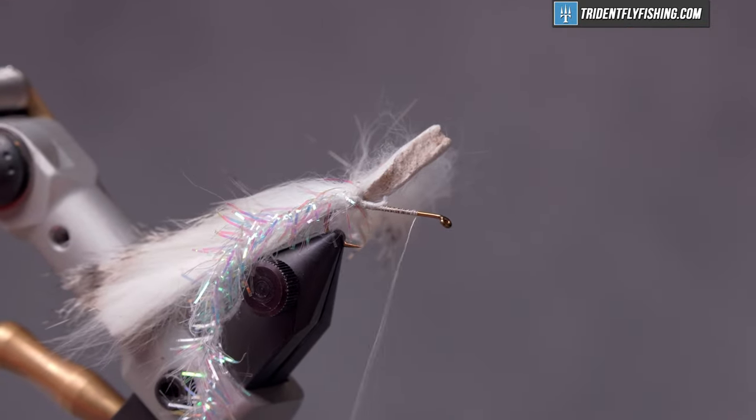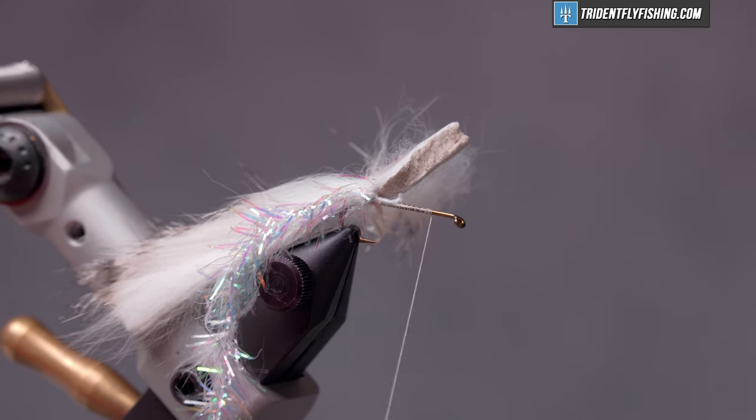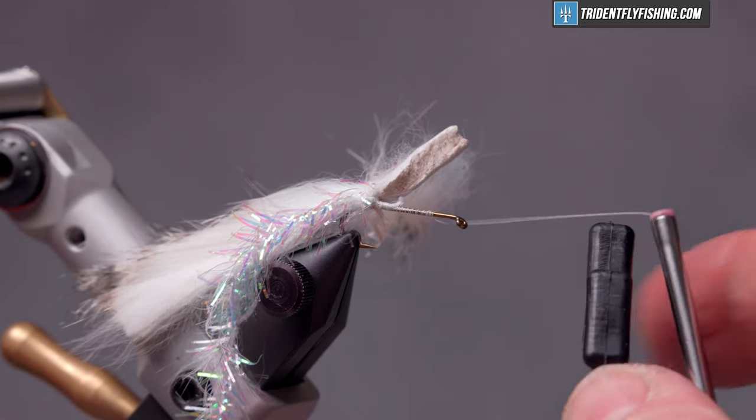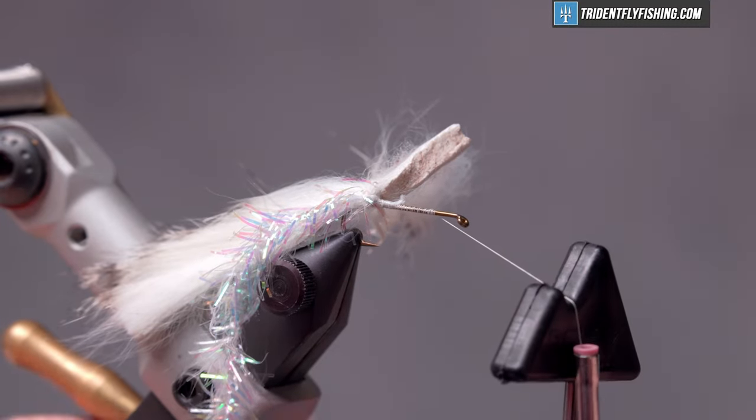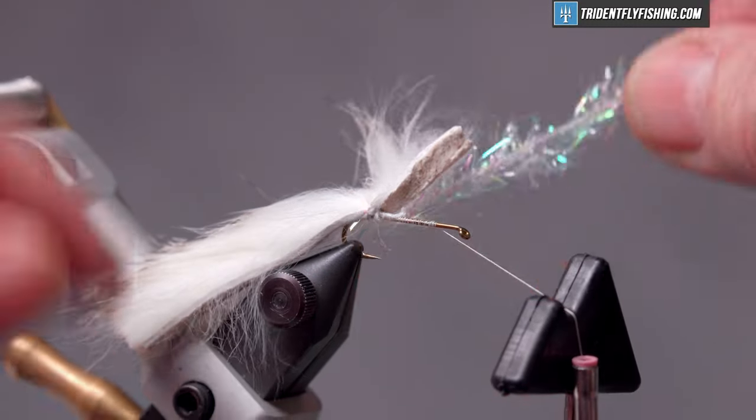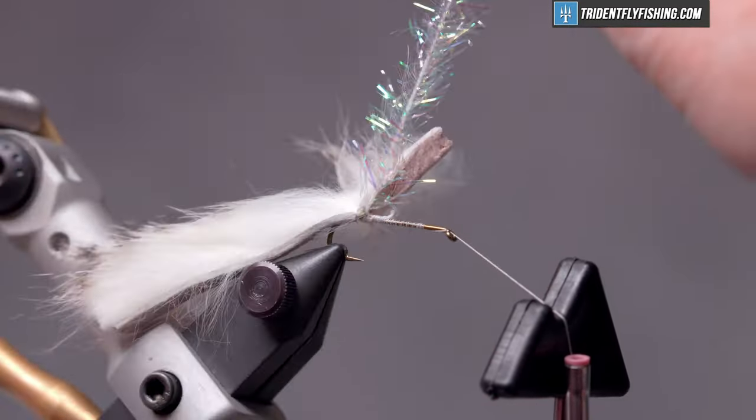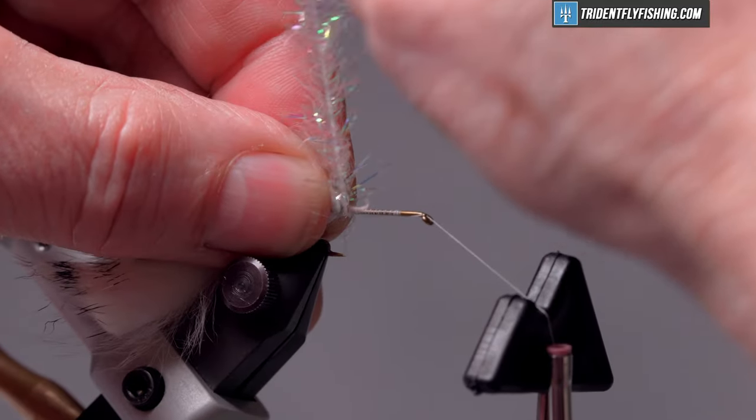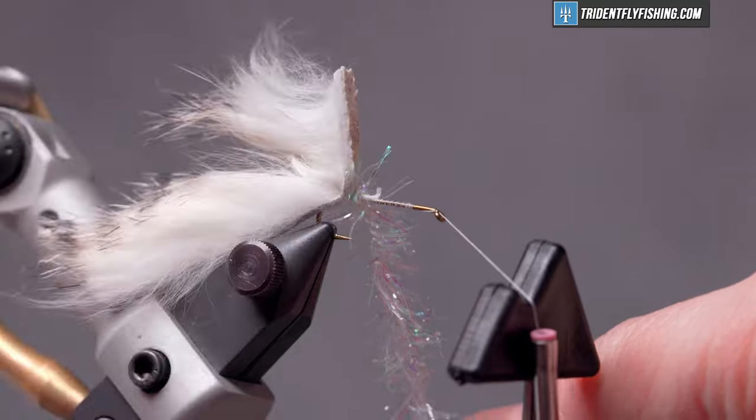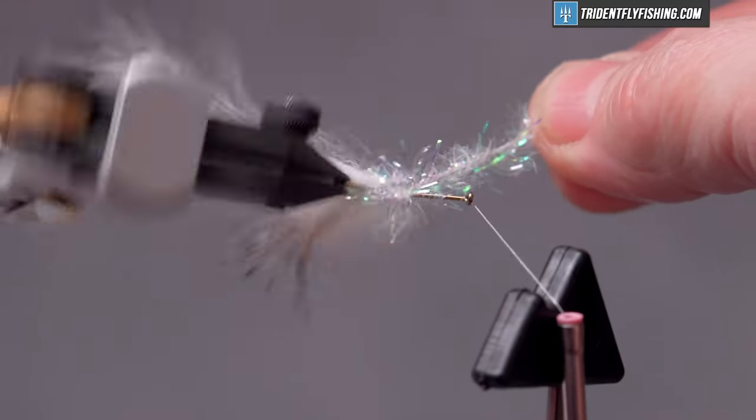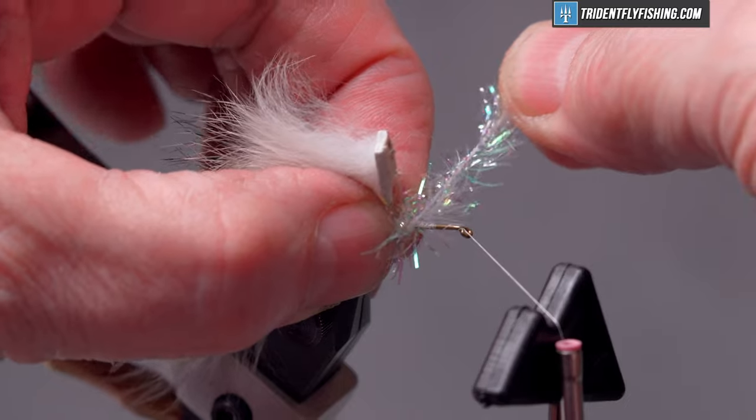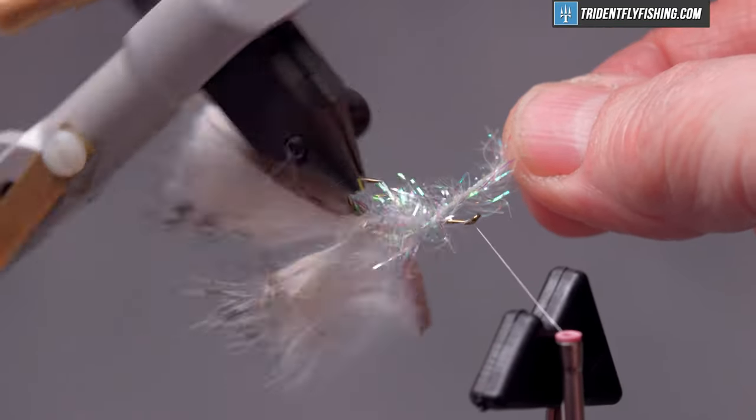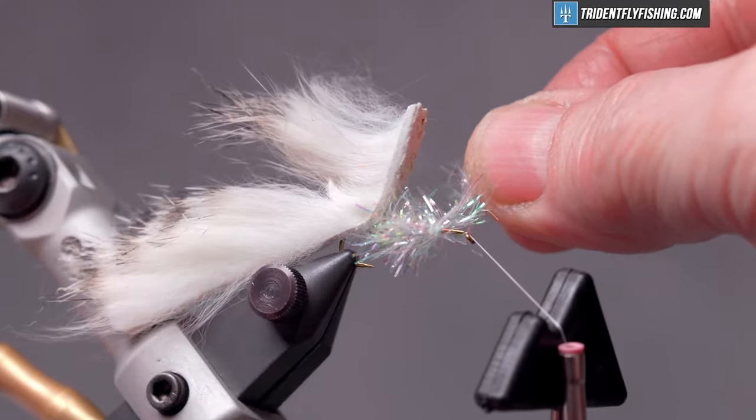Put a whip finish in so that we can use our rotary function of the vise to tie in the body. This first wrap you want to give a good tight tug on it. With touching turns we're just going to wrap this up the hook until we reach our tie-in point right there.